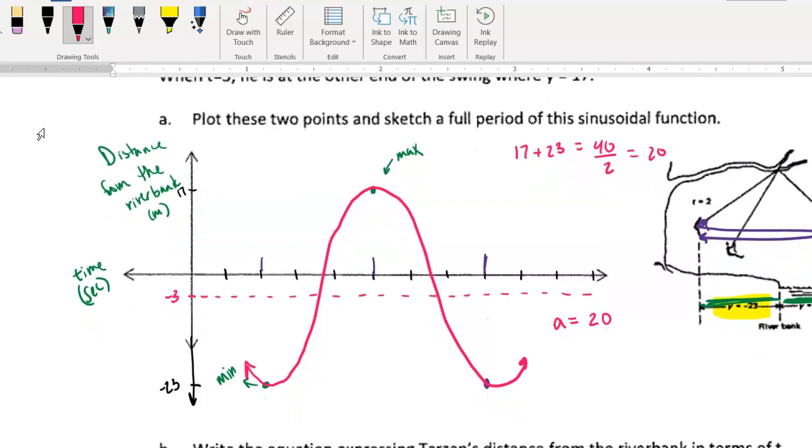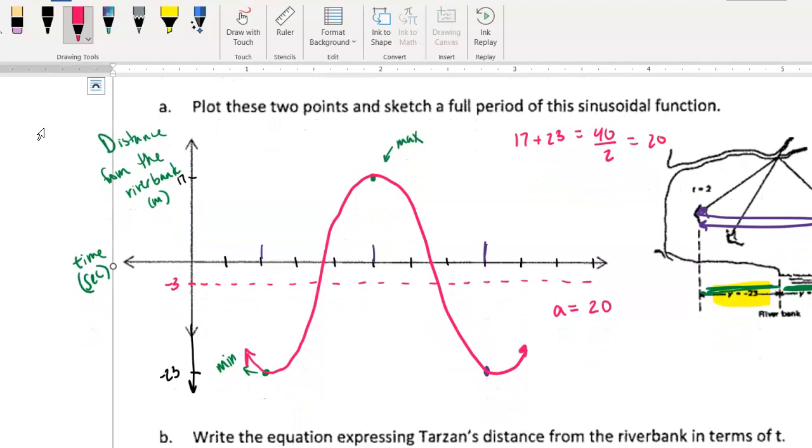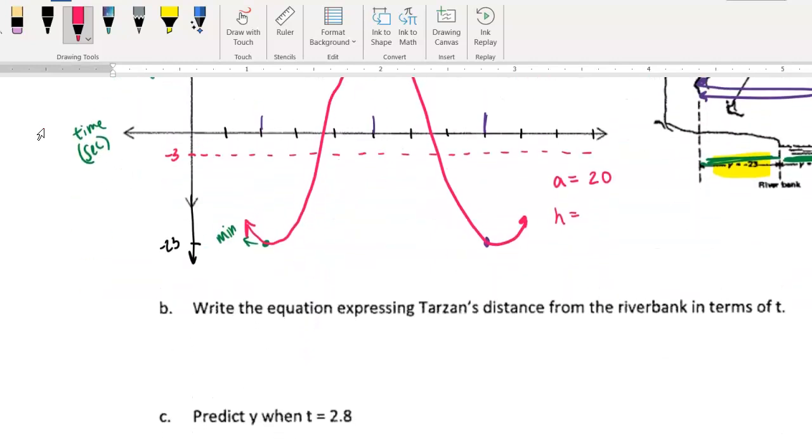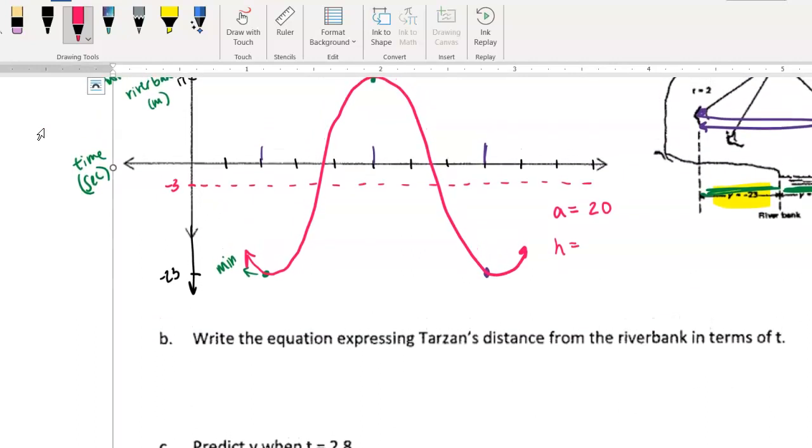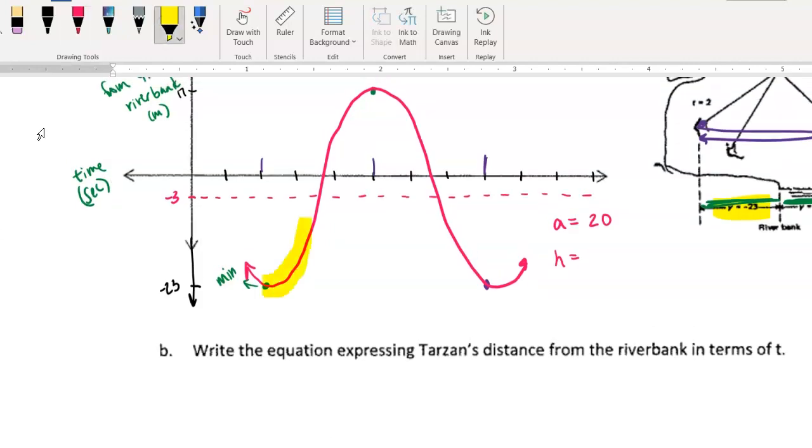So we need to know what our H value, our B value, and our K value. So let's start with our H value. So if we're basing this on the cosine function, or actually, let's look at the first question. The first question says, write an equation representing distance from the riverbank in terms of T. So there, it doesn't say if we should do it for a sine or cosine function, it really doesn't matter. So I guess you get to pick.